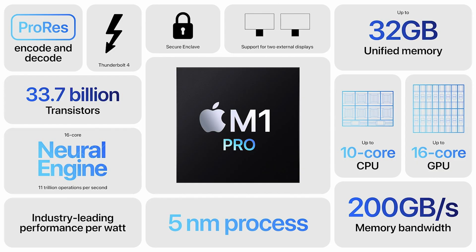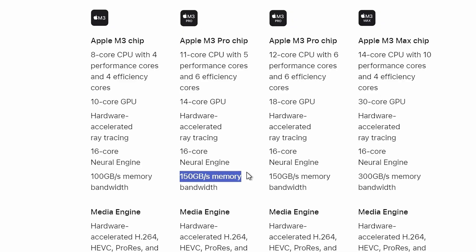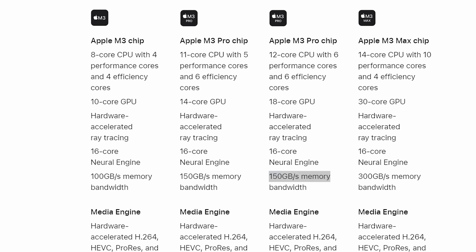Megatransfers per second basically means how fast data can be sent between memory and all the different components within the system. In terms of bandwidth — how much data you can send up and down at a time — the M1 Pro and M2 Pro have a 256-bit memory bus, which allows for 200 gigabits per second. But on the M3 Pro, that was reduced by 25% to a 192-bit bus, giving you only 150 gigabits per second of data transfer speed.